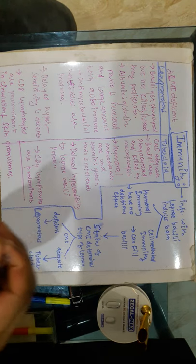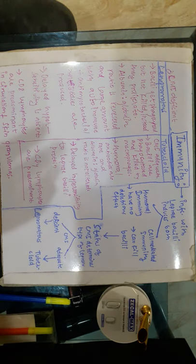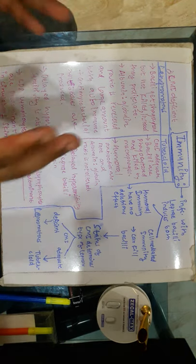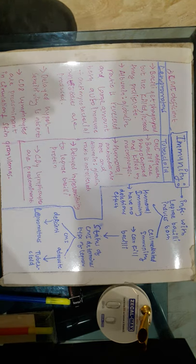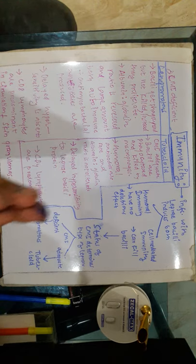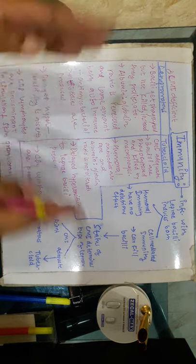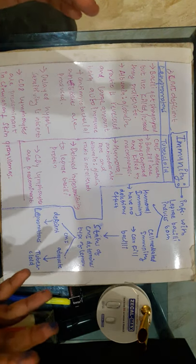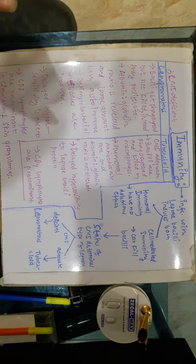That covers the topic of immunity in leprosy. One remaining point is that the course of leprosy can be divided into two reactions: Type 1 reaction, also known as lepra reaction or reverse reaction, and Type 2 reaction, also known as ENL — erythema nodosum leprosum. We will discuss those comparatively in the next video, which will be shorter. After that, we shall move towards the lepromin test, lab diagnosis, and treatment.